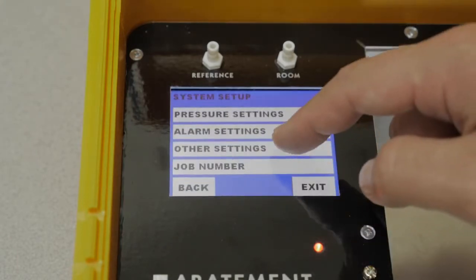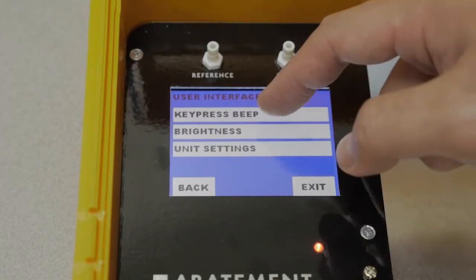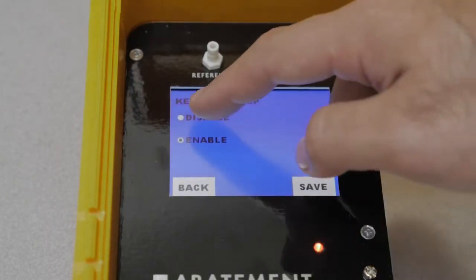When going through other settings, you can scroll through to key press beep, which will enable or disable the beep upon button press.